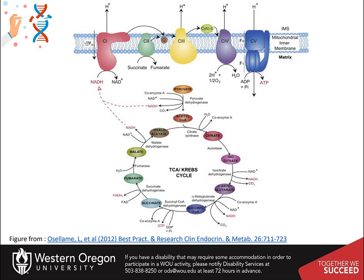In the next lecture, we will learn how the electrons harvested in the Krebs cycle are used to generate ATP through the electron transport chain.